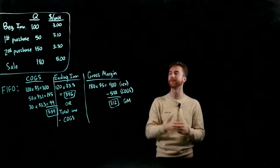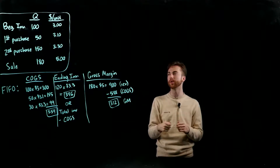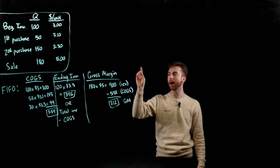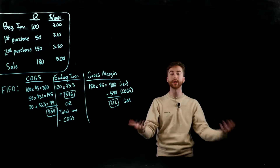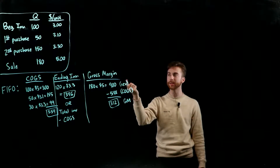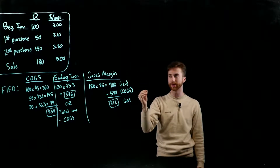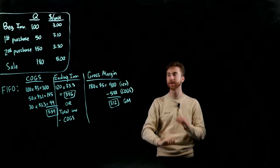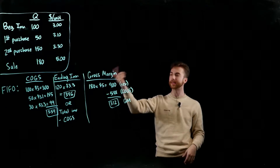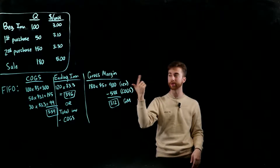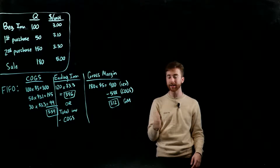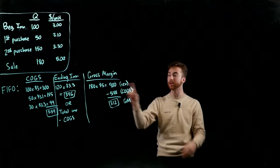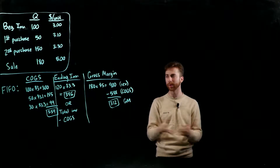For this example, our company starts with 100 units of inventory at $3.00 per unit at the beginning of the year. Later we make a first purchase of 50 units at $3.10 per unit — prices went up. Then a second purchase of 150 units at $3.30 per unit. Finally, we sell 180 units at $5.00 per unit, where $5.00 is the selling price. Using FIFO, we go back and value those 180 sold units from oldest to newest.